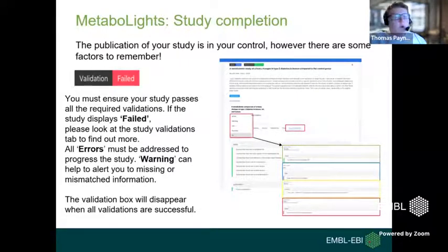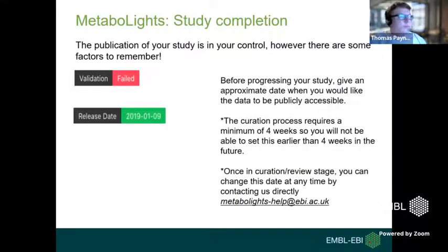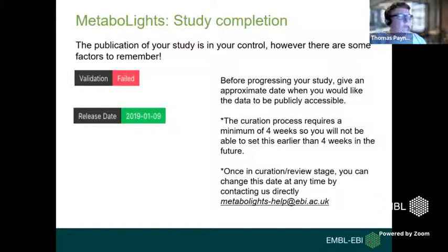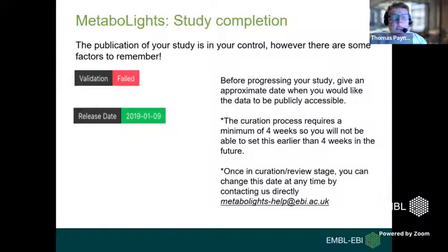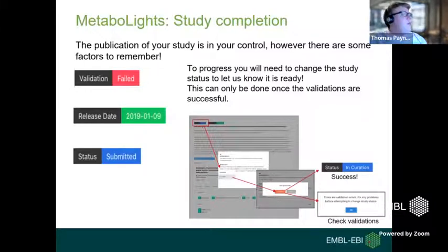Just a reminder that there are four stages: submission (study curation), curation, in review, and public. The 'in curation' stage is to assess whether the study is complete and fulfills the requirements of MetaboLights. To progress, you will need to change the study status to let us know when it's ready to be curated, and this can be done only once the validations are successful.